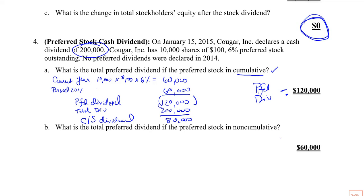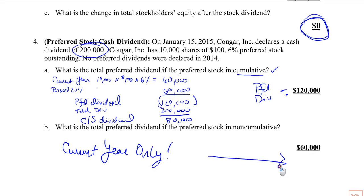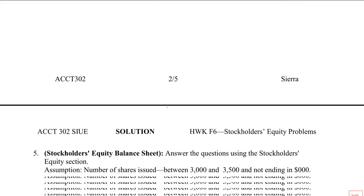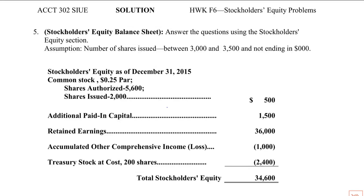What is the total amount if it's non-cumulative? If it's non-cumulative, then you get current year only, which is $60,000. Just by changing that word, it cut the dividend in half in this instance. So cumulative always receives more than non-cumulative. I'm going to take a break so the video doesn't get too long, and we'll start on number five. Thank you.